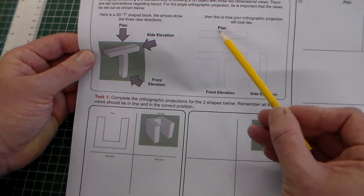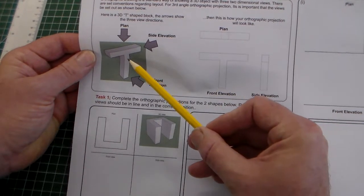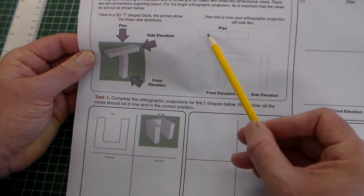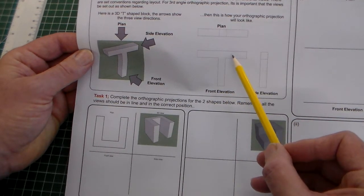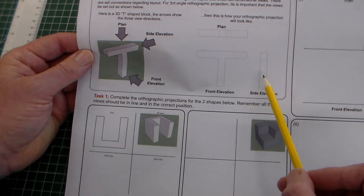And they would be laid out, so an orthographic projection of this 3D object would be here, a plan view, a front elevation, and a side elevation.